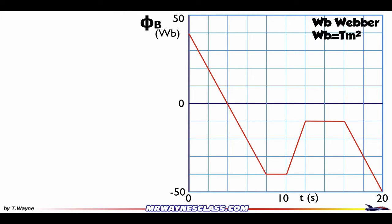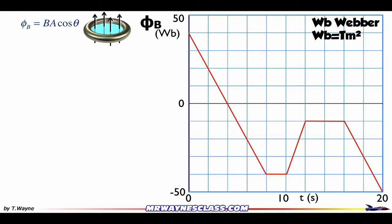Let's talk about Faraday's Law and the change in flux with respect to time on a graph. First, a quick review. Flux is defined as B·A·cosine theta — that's the cross product between the B field and the area vector. If we look at a conducting ring, the plane of the ring has an area vector perpendicular to it, and the black lines are the B field going through the ring. These produce an induced EMF, equal to negative N times the change in flux over the change in time.